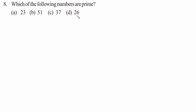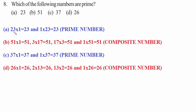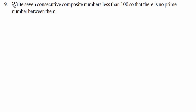Question eight: which of the following numbers are prime? 23 has factors only 1 and 23, so it is prime. 51 has factors 1, 3, 17, and 51, so it is a composite number. 37 has factors only 1 and 37, so it is prime. 26 has four factors — 1, 2, 13, and 26 — so it is a composite number.